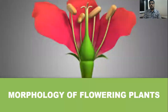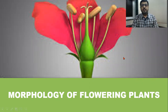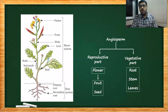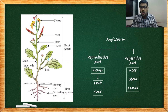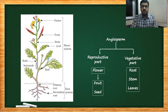Let me share my screen. Okay, I hope you can see the screen right now. The second topic is stem. As we spoke last time, an angiosperm has two parts: a reproductive part and a vegetative part. Our discussion right now is going on the vegetative part — root, stem, and leaf. Vegetative parts are those which do not reproduce.